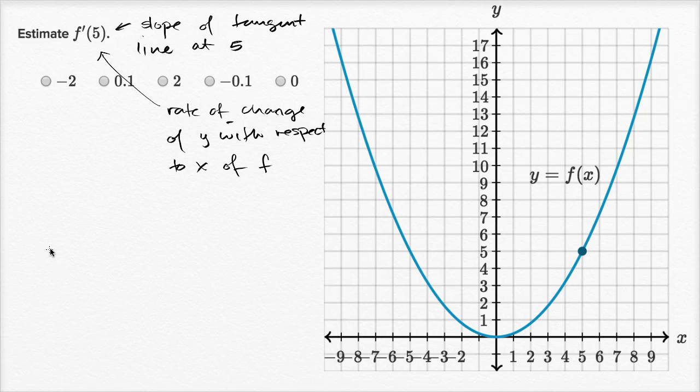So let's think about that a little bit. We see they put the point five comma f of five right over here, and so if we want to estimate the slope of the tangent line, or if we want to estimate the steepness of this curve, we could try to draw a line that is tangent right at that point.